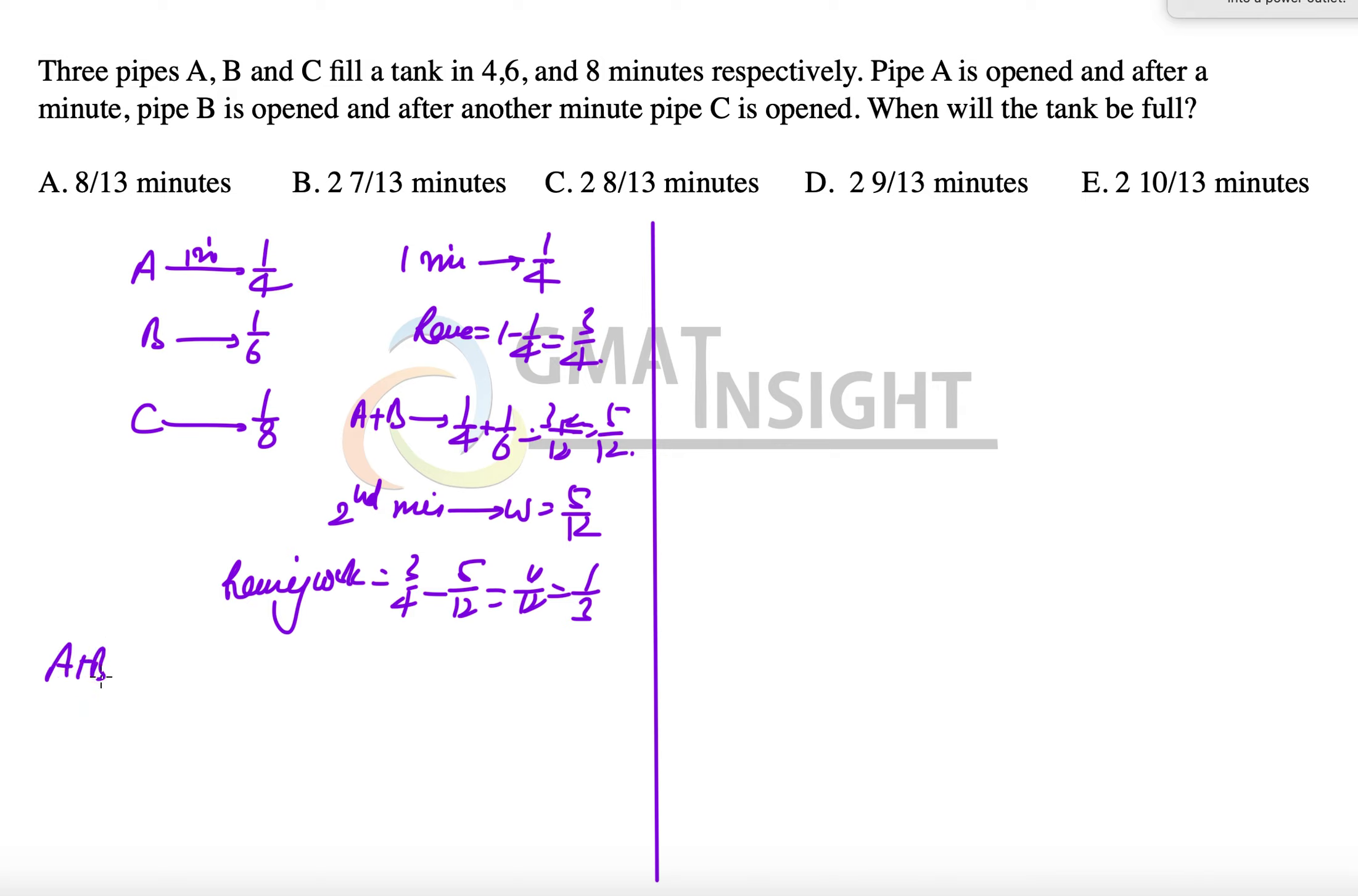Now A, B, C, all three of them are working on it. So they can finish 1/4 plus 1/6 plus 1/8 work. So let's take the LCM 24: 6, 4, 3, 13/24.